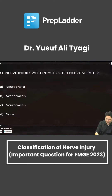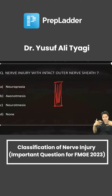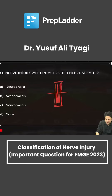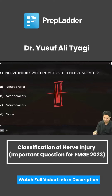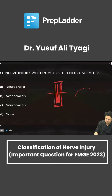Alright, imagine this is a nerve. All these nerves have multiple axons which are clumped together. There are multiple units of the nerve which are clumped together. In order to have a basic understanding of the arrangement of this nerve, we are taking a cross section, and this is how the cross section will look like.